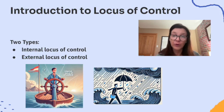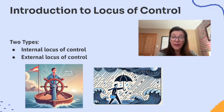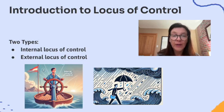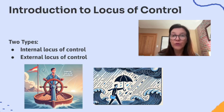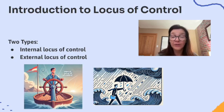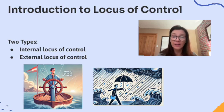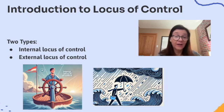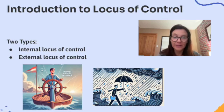There are two types of locus of control: internal and external. Let's start with internal locus of control. People with an internal locus of control believe that outcomes are influenced by their own actions and decisions. They think, 'I'm in charge of my own destiny.' For example, 'I did well on the test because I studied hard,' or 'if I fail, it's because I didn't put enough effort into it.'